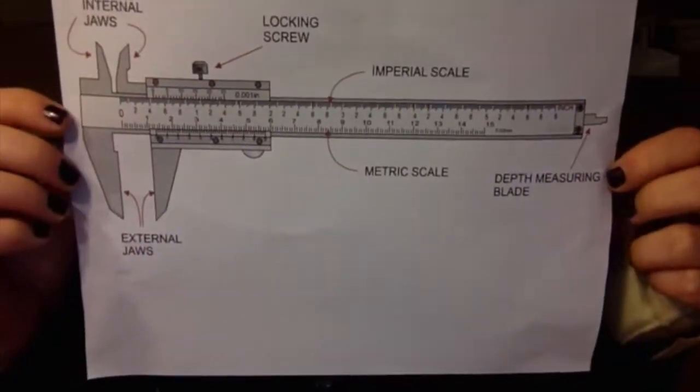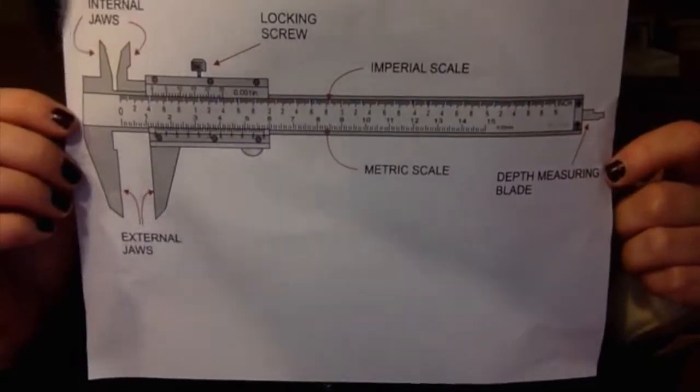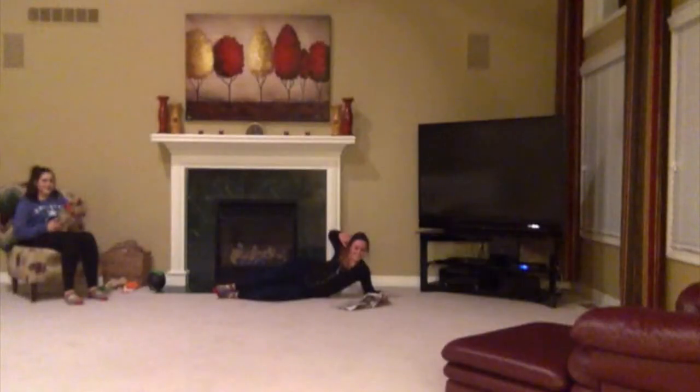When you are measuring an object, you want to make sure you close the jaws tightly—I mean lightly—around the object.